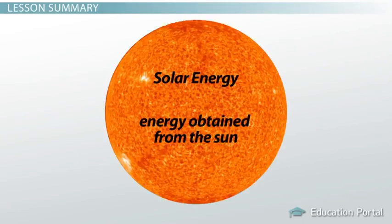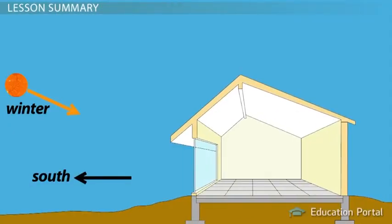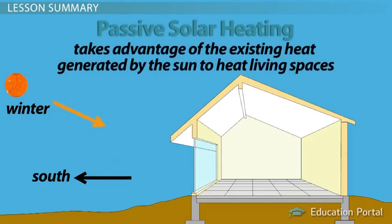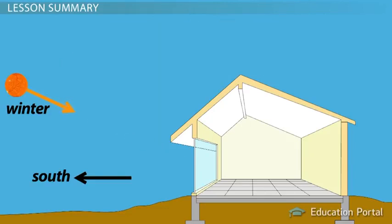Let's review. Solar energy is energy obtained from the Sun. With some planning, we can devise ways to capture this energy to heat our homes and other buildings. Passive solar heating is a method that takes advantage of the existing heat generated by the Sun to heat living spaces. The efficiency of passive solar heating is improved by positioning a building in a way that captures the most sunlight.